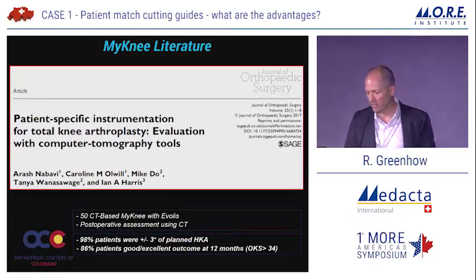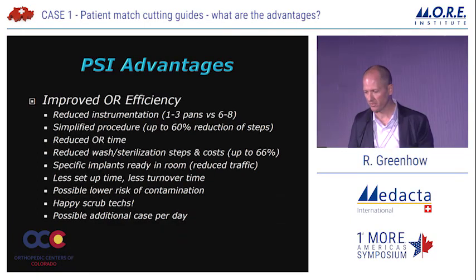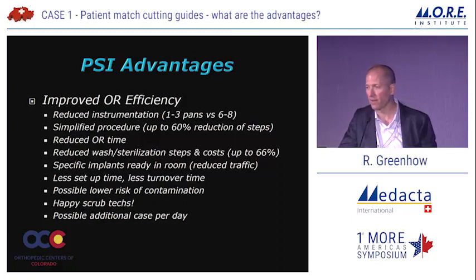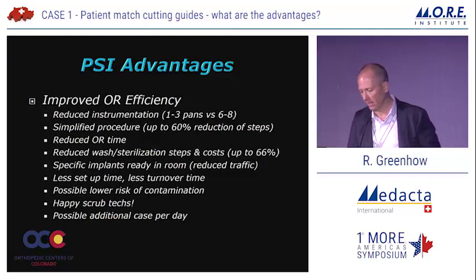Eighty-six percent of patients had good to excellent outcomes at 12 months. We don't violate the intramedullary canal, so like computer-assisted surgery, there's less risk of fat embolization, less blood loss, and fewer transfusions. I think this is a big advantage to improve OR efficiency — reduced instrumentation, one to three pans versus six to eight. Studies show a reduction of on average four pans per case. It's a simplified procedure; we're drastically cutting the number of steps. Reduced OR time, reduced wash and sterilization steps and costs — shown to be around $300 in studies. We have our implants ready to go in the room, less traffic, less setup time, significantly less turnover time, and possibly lower risk of contamination based on all of these efficiencies.